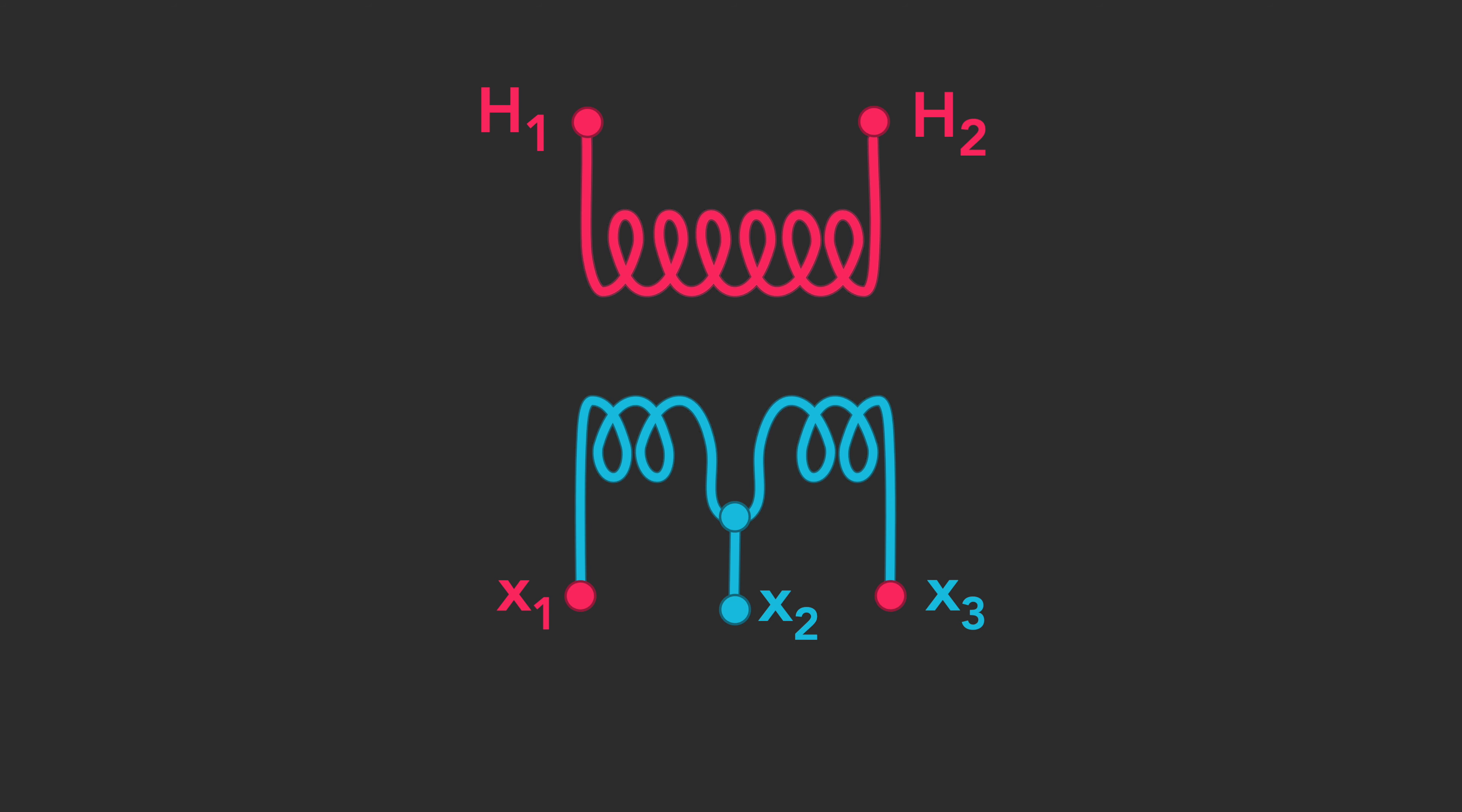An end of the other secondary winding is connected to the X3 bushing. The remaining ends of both windings are joined together at the X2 bushing.